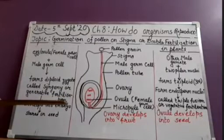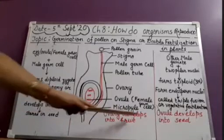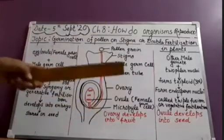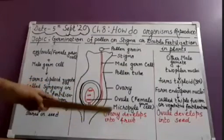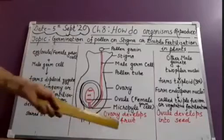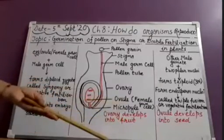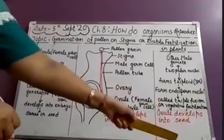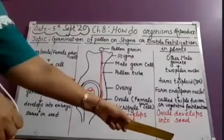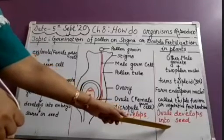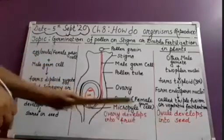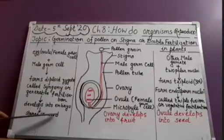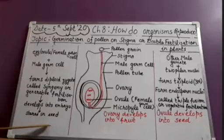An important NCERT question asks: what happens after fertilization in plants? After fertilization, the ovary develops into the fruit, which contains nourishment, juices, and many nutrients. The ovule develops into the seed, and the seed stores the future plant — that is, the embryo. As explained, after fertilization the zygote or syngamy develops into the embryo, which is stored in the seed.